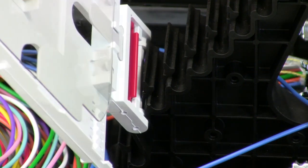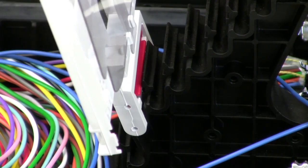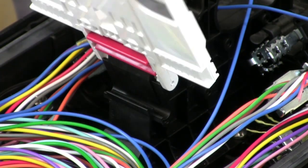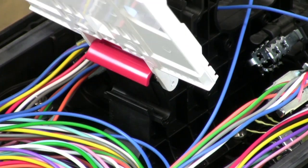Attach the splice trays to the tray tower, starting at the bottom position. If needed, the trays can be locked in the up position by using the red kickstand feature.